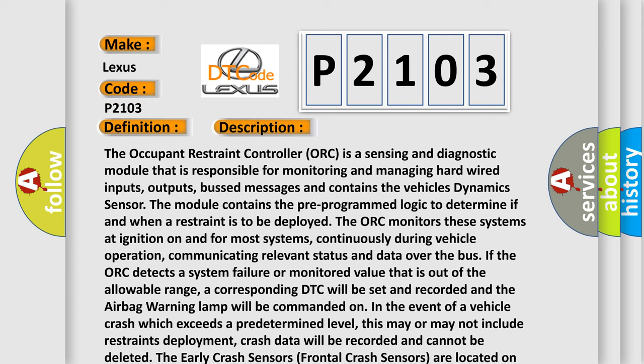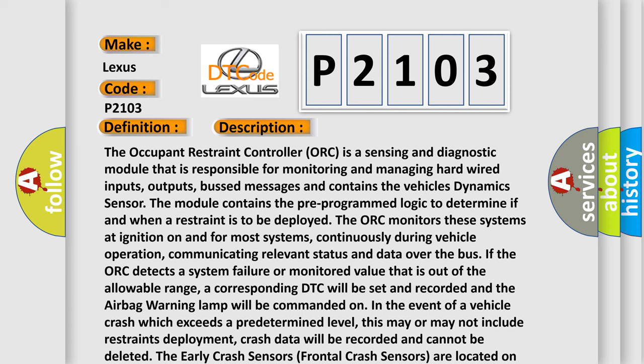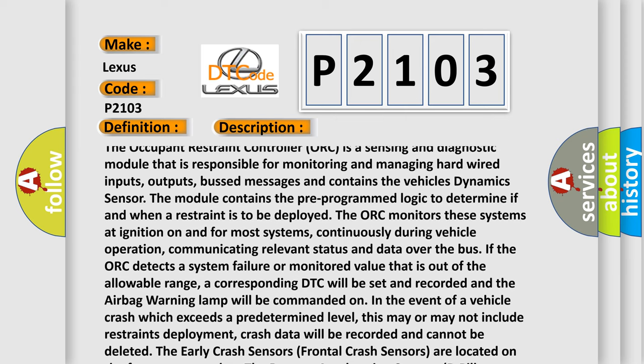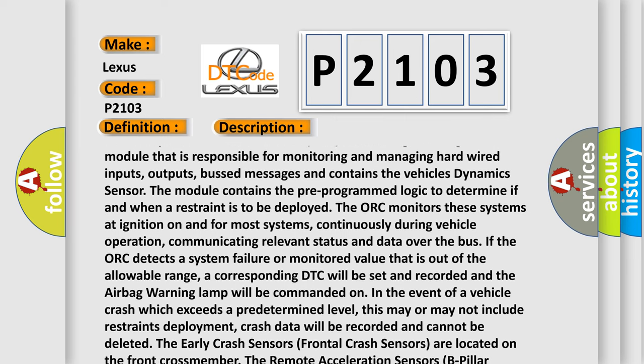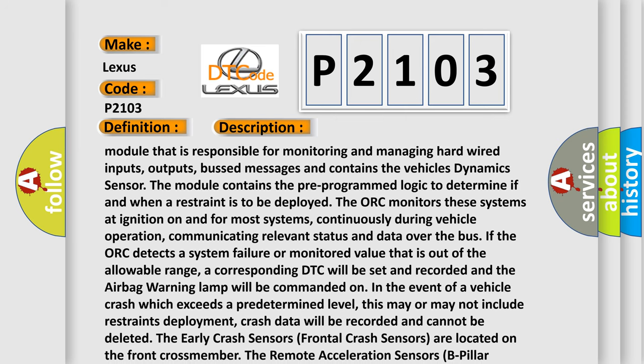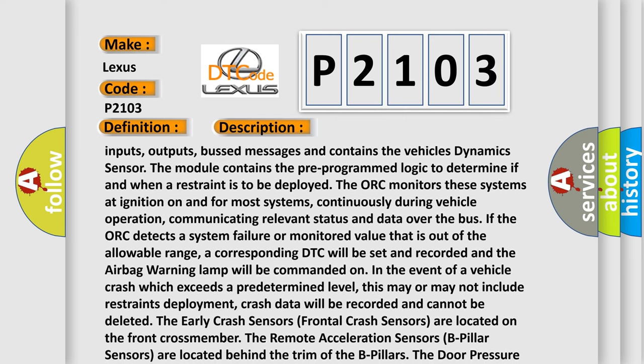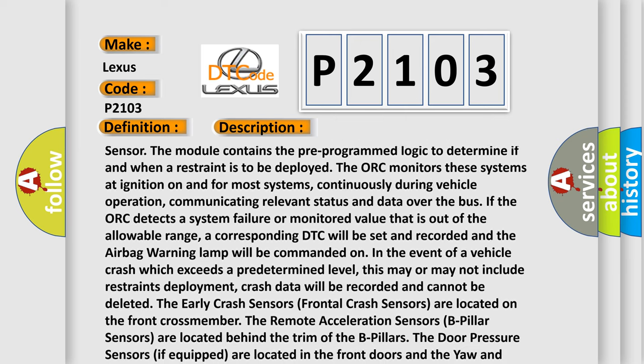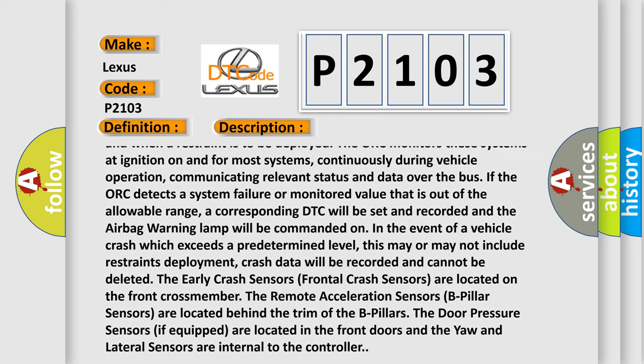The occupant restraint controller ORC is a sensing and diagnostic module that is responsible for monitoring and managing hardwired inputs, outputs, bus messages and contains the vehicle's dynamic sensor. The module contains the pre-programmed logic to determine if and when a restraint is to be deployed. The ORC monitors these systems at ignition on and for most systems, continuously during vehicle operation, communicating relevant status and data over the bus. If the ORC detects a system failure or monitored value that is out of the allowable range, a corresponding DTC will be set and recorded and the airbag warning lamp will be commanded on.